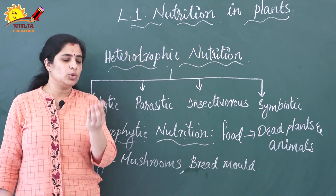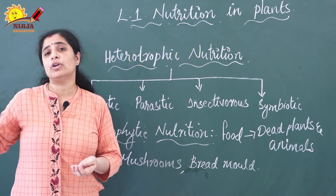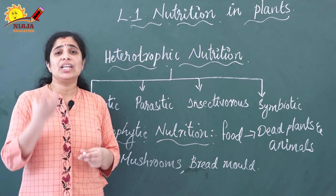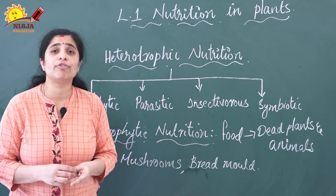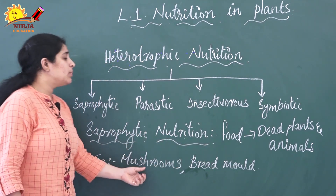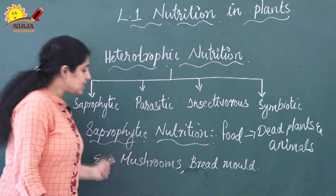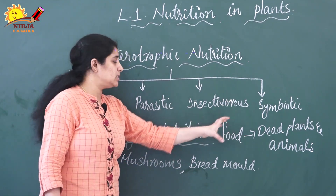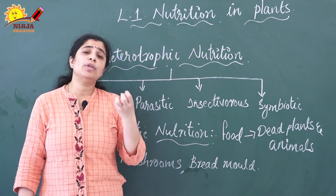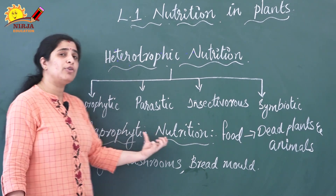Here is an experiment: take a piece of bread, sprinkle some water on it, cover it in a plastic bag, and keep it for some days. After some days you can see patches on it — these patches are fungi. This is an example of saprophytic mode of nutrition; this is bread mold. Examples of saprophytes include mushrooms and bread mold. What happens is that saprophytes convert dead plants and animals into a solution form and absorb the nutrients from that solution.